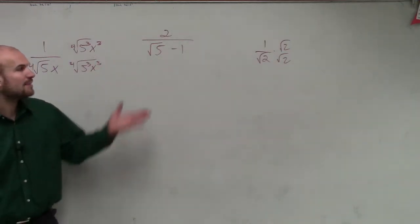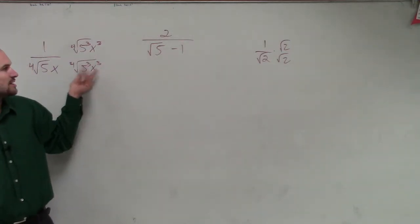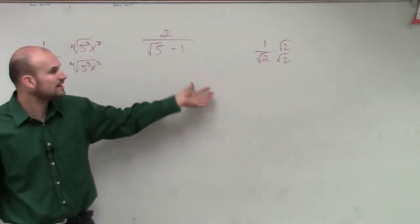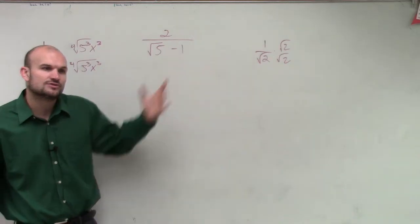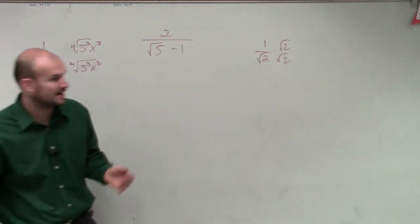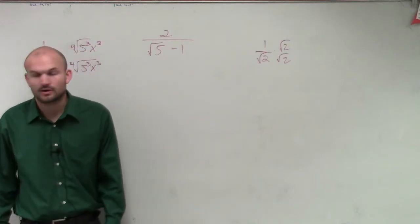Well, now we come into a little problem because we don't have a monomial like we did over here or over there. Now we have a binomial. We have two monomials separated by a subtraction sign. So whenever you have a binomial, if they're separated by a subtraction or by an addition sign, we need to apply a little bit different rules.